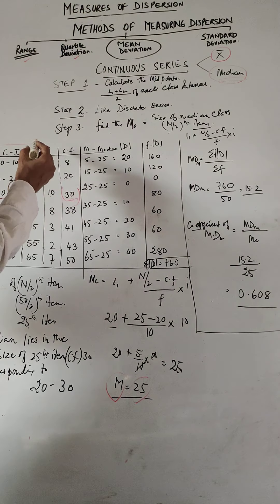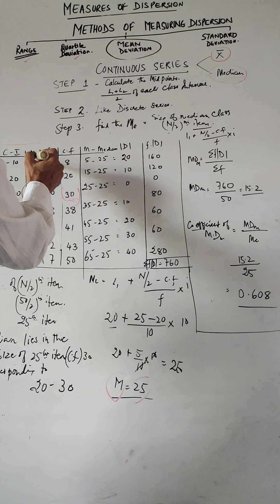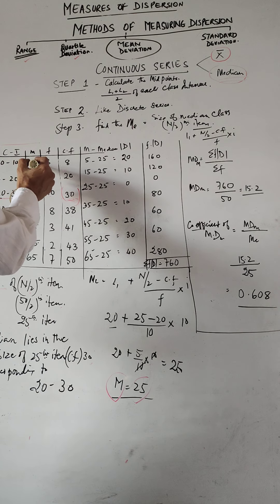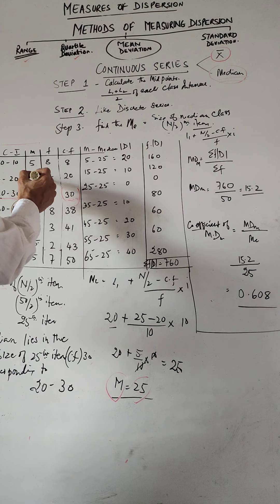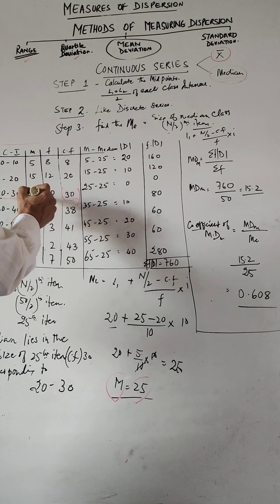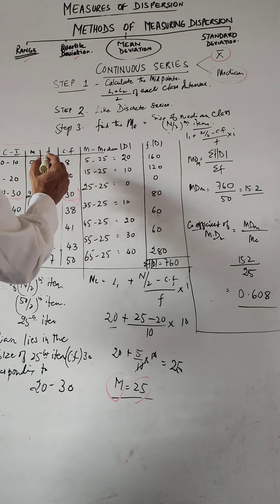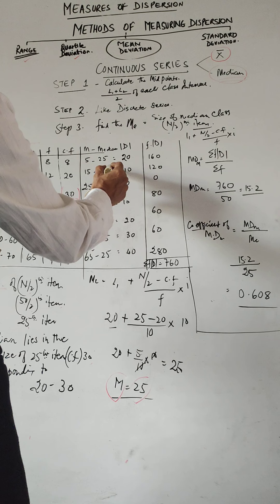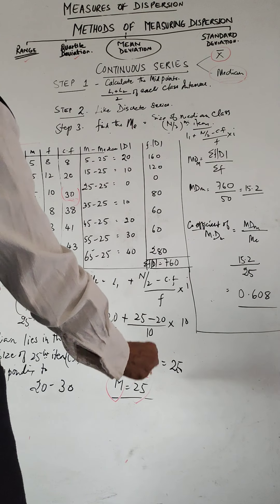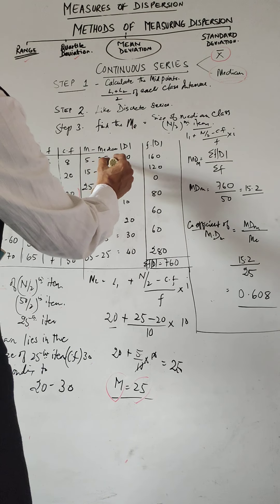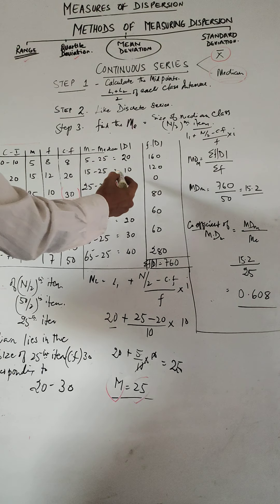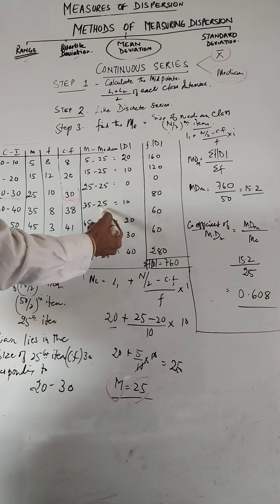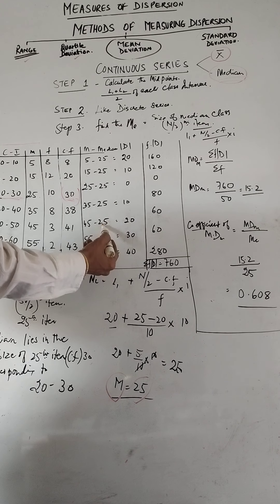So now we go ahead. We first find out the mid values. So what are the mid values? It is 0 plus 10 divided by 2 is 5, 10 plus 20 is 15, 20 and 30 is 25, etc. So now next is you take the mid values and you minus the median. Whatever median you got, so median is 25. So 5 minus 25 is 20, 15 minus 25 is 10, 25 minus 25 is 0, 35 minus 25 is 10.